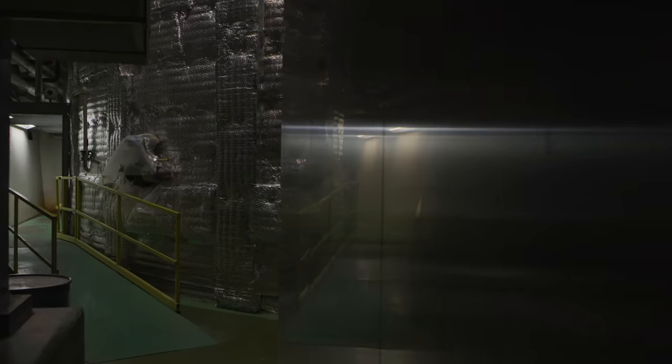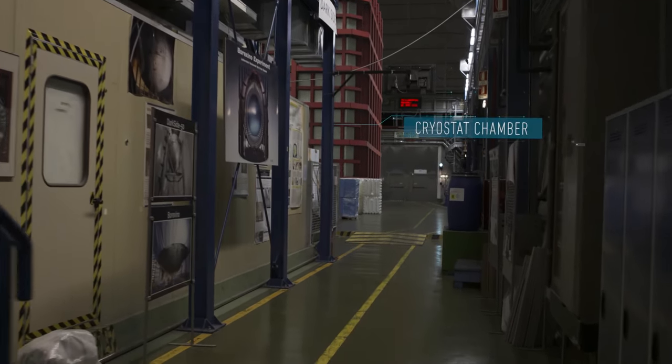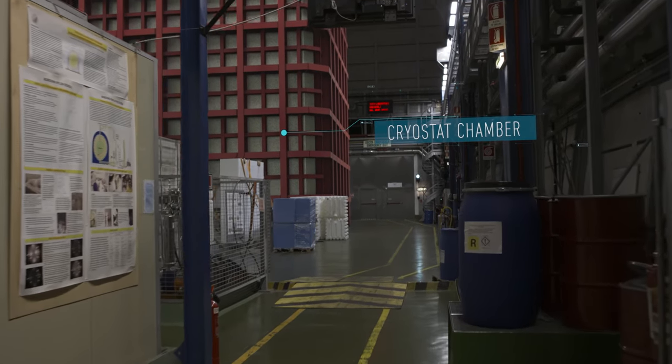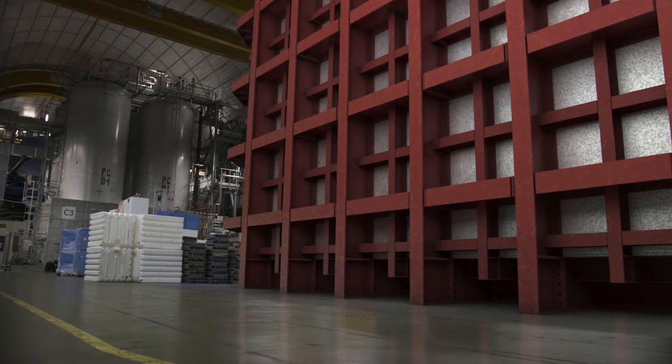The outer structure of DarkSide 20K is a large cubical cryostat chamber that contains around 700 tons of liquid argon and acts as a shield from outcoming background particles. Within the cryostat is the veto chamber,